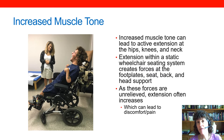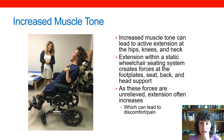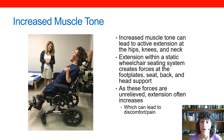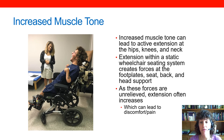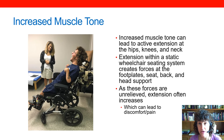Many of our clients have increased muscle tone, like my friend Spencer here, and that can lead to active extension at the hips, the knees, and the neck. Extension within a static seating system creates forces wherever there is contact with the body during extension. Particularly we see this at the footrest, at the seat and back — more so the back. Some of our clients might actually lift off of the seat, as we can see Spencer doing here, and on the head support pad behind the head.